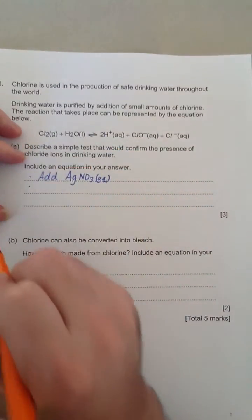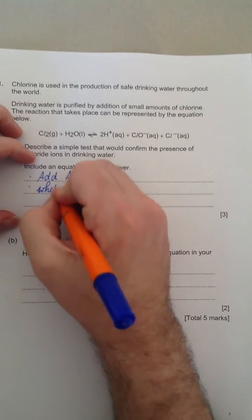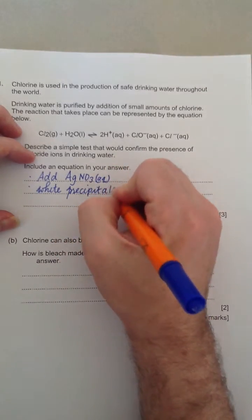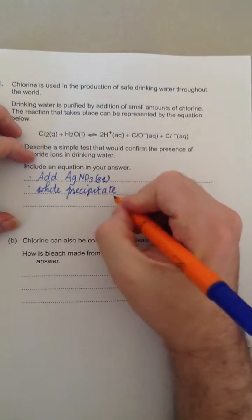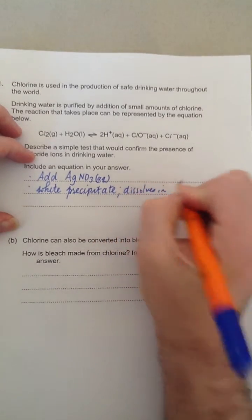And if there's a positive test for a chloride ion, you would see a white precipitate forming. And the precipitate of silver chloride dissolves in ammonia, as well as NH3.